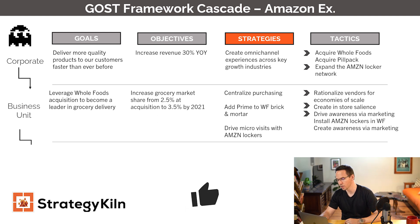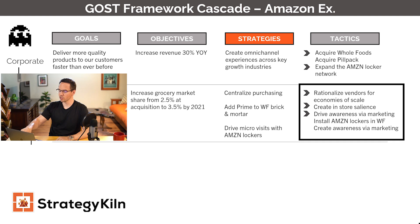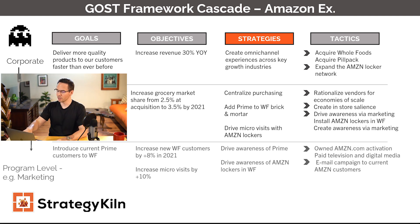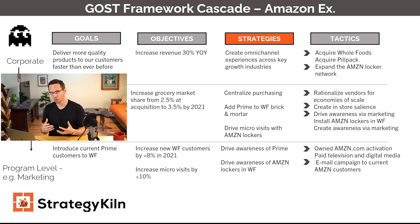At the business unit level — and just to bring it back a step, a business unit for Amazon could be the grocery division, the fashion division, or even at the brand level like Amazon Essentials. Looking at a tactic here: install Amazon lockers in Whole Foods to create awareness via marketing. That was a tactic in the business unit section. But when we come down to the strategy under the program level, using an example of marketing, you can see that tactic of installing Amazon lockers is being reinforced as a strategy. Sometimes tactics at the business unit level become a strategy at the program level — it's all very fluid.